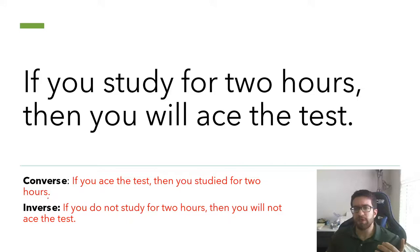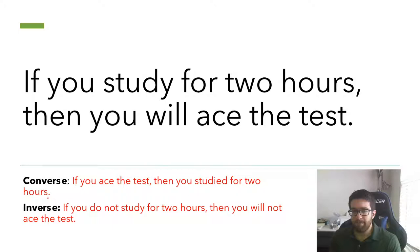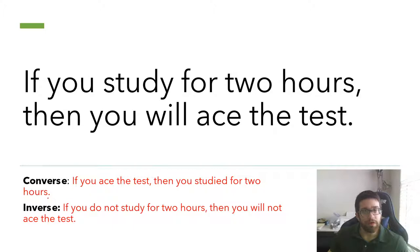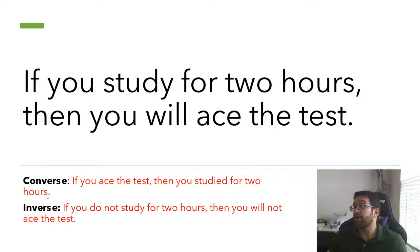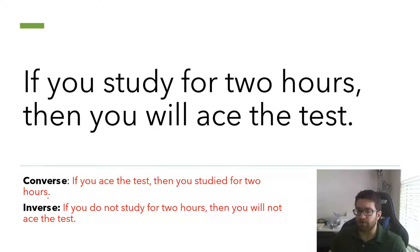A quick note: if the original statement was true — if you study for two hours, then you will ace the test — it doesn't necessarily mean the converse and inverse are also true. The converse says if you ace the test, then you studied for two hours. Well, that might not be true. There are a lot of other reasons why you could ace the test: maybe you're a really good test taker, maybe you paid attention in class, maybe you didn't need to study at all. The converse isn't necessarily true. It seems the same of the inverse — if you don't study for two hours, you might still ace the test anyway.